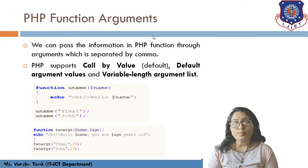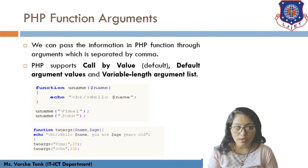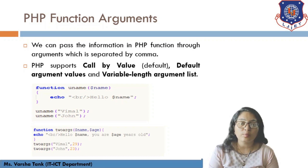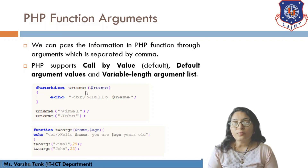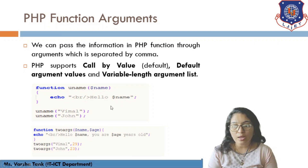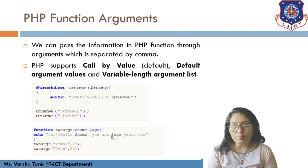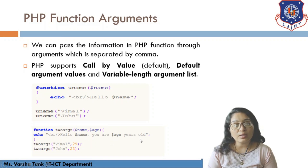Next is PHP function arguments. You can pass information into PHP functions through arguments, which are separated by commas. Types include call by value, default value arguments, call by reference, and variable length arguments. For example, a function with parameter $name can echo 'hello $name', so passing 'Vimal' prints 'hello Vimal'. You can also pass two arguments — passing 'Vimal' and '29' prints 'hello Vimal, you are 29 years old'.